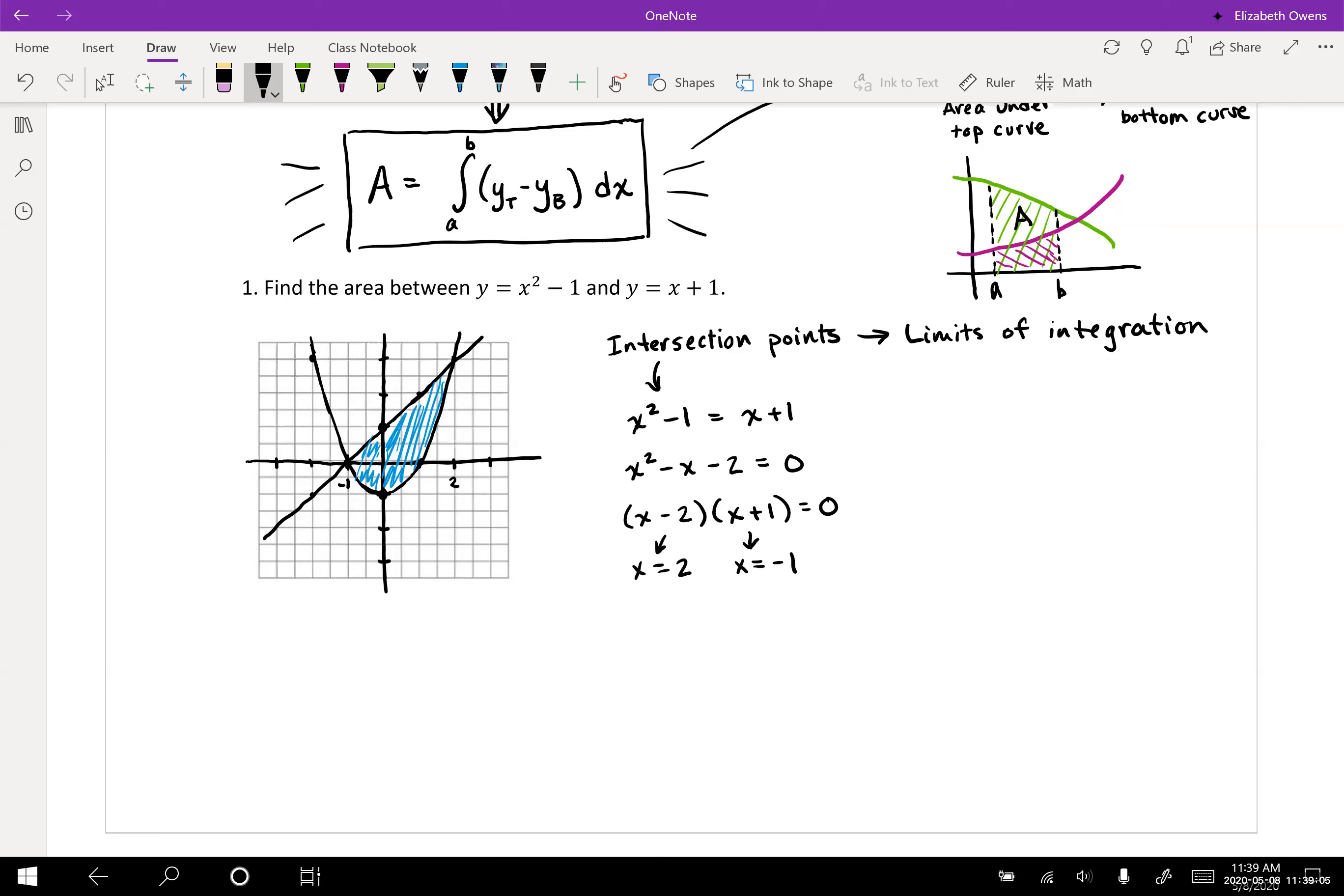That kind of just confirms what we saw on the graph here, but know that you can always use this intersection point approach as well. That's especially nice when the numbers aren't quite so clean, like if it was a square root of two or something instead, that would be pretty hard to pick off of the graph. So it's good to know this intersection point approach.